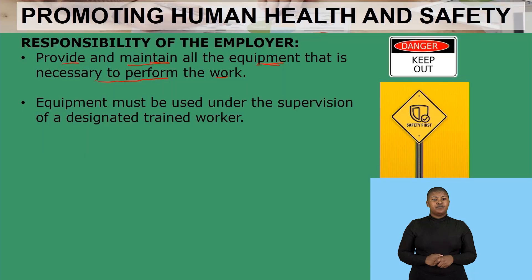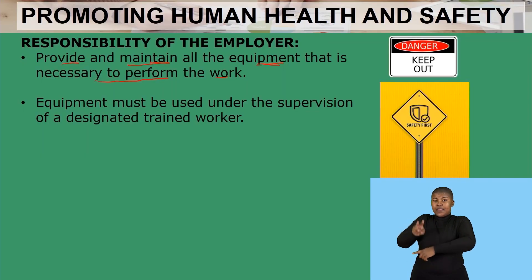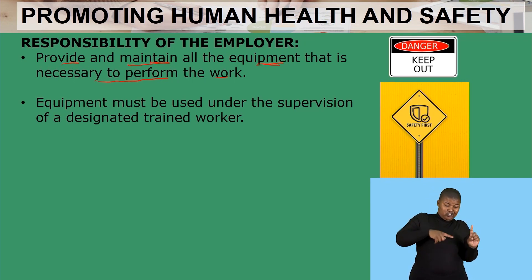Number two: equipment must be used under the supervision of a designated trained worker. This focuses on safety first — equipment that is dangerous must be used by someone who is trained, or the trained person should supervise those who are not trained when they are in the process of using that machine, because that is promoting health and safety in the workplace.